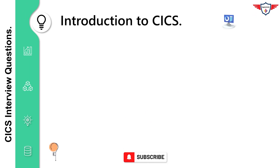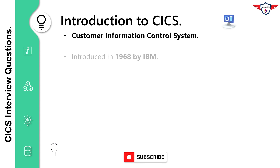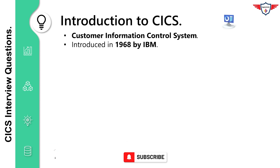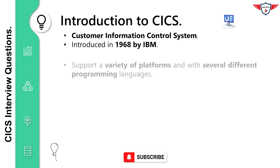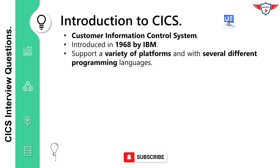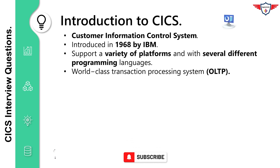The term CICS stands for Customer Information Control System. It is a general-purpose transaction processing subsystem for the z/OS. CICS has evolved over the years since it was first introduced in 1968. At that time, it ran only on IBM mainframes and in a limited capacity. Today, CICS can be used on a variety of platforms and with several different programming languages, and with the introduction of IBM's CICS Transaction Server, CICS became the premier server for internet applications.